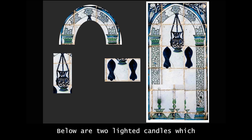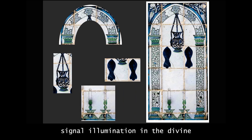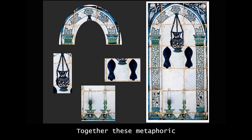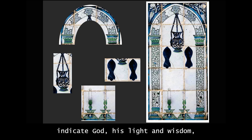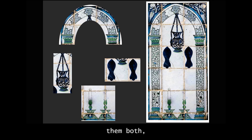Below are two lighted candles which signal illumination in the divine presence. Together, these metaphoric representations indicate God, his light and wisdom, Muhammad's proximity to God, and the illumination the believer derives from them both and from prayer directed to the mihrab.